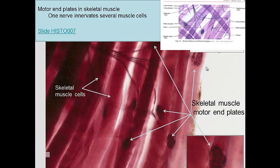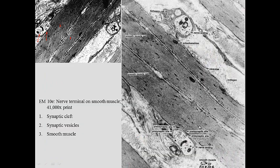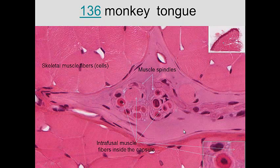We saw this before — this is a motor end plate where a nerve comes in and innervates various skeletal muscle cells. Various nerves: a nerve comes here and interacts with various skeletal muscle cells — one here, one there, one there — and then we can see the motor end plate. If we look at smooth muscle cells, we can see a synaptic cleft where the axon synapses. The vesicles we see here carry neurotransmitters that would stimulate the smooth muscle to contract.